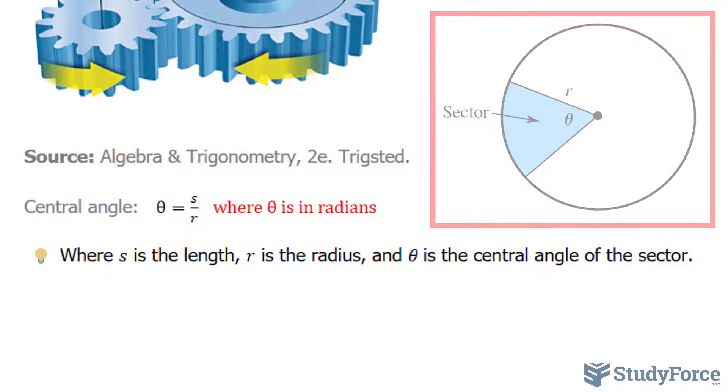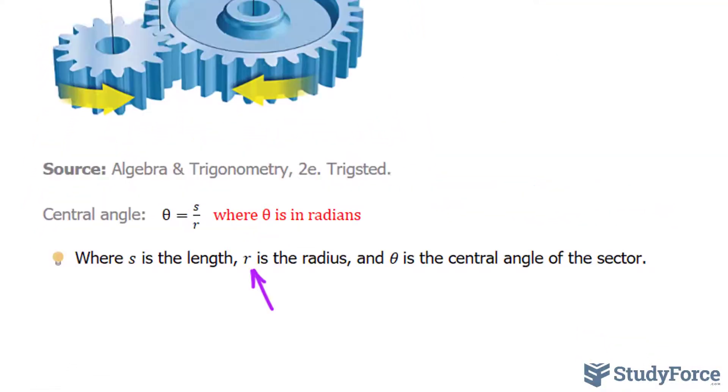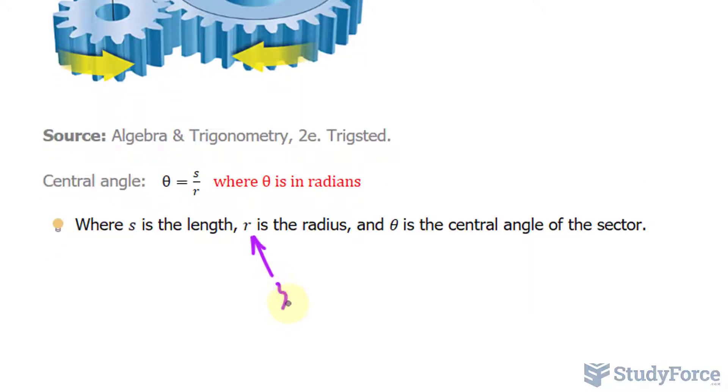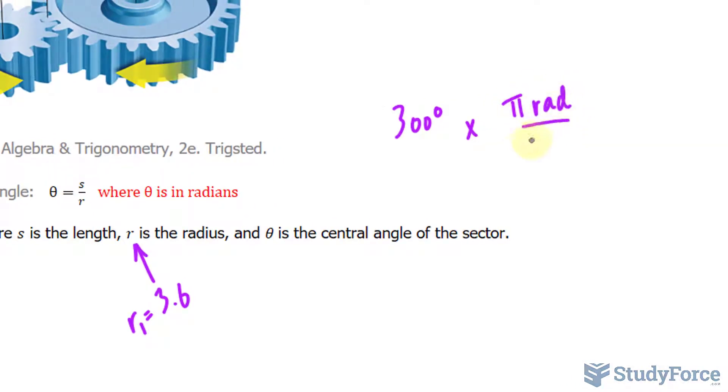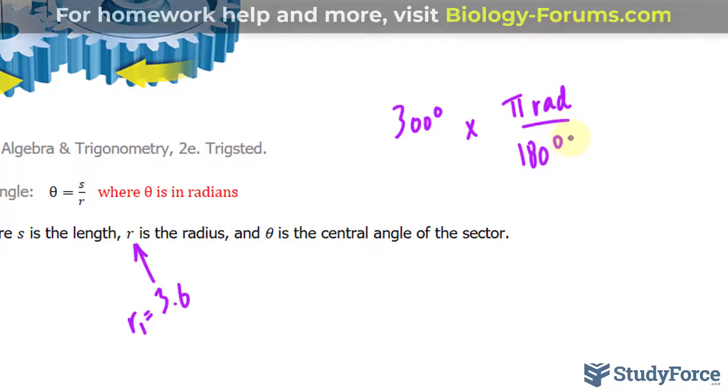So we've been told already what the radius is. The radius of the smaller circle is 3.6, I'll call that R1. And we've been told that it rotated 300 degrees. For this formula to work, we need to convert that angle into radians. So we need to make 300 degrees into radians. And the conversion ratio is for every pi radians, that equals 180 degrees. So this unit and this unit cancels out, giving us what the answer is in radians.